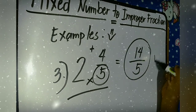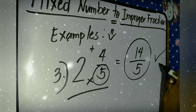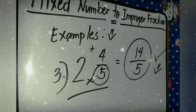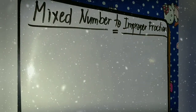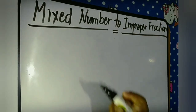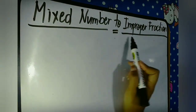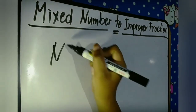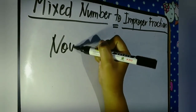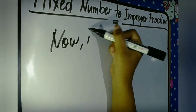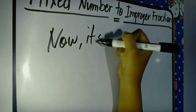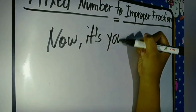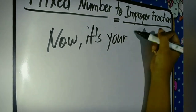The final answer is fourteen over five. We are done discussing mixed number to improper fraction. Now it's your turn.